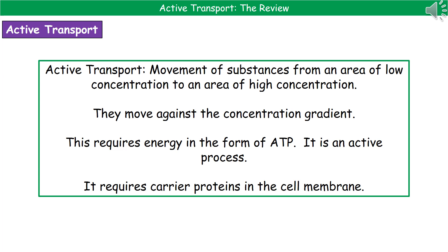Passive processes — like diffusion and osmosis — require no energy, but active transport is an active process and requires energy. In addition to the energy, in order to carry out active transport, we also need a special type of protein called carrier proteins, which are found within the cell membrane of the cells.